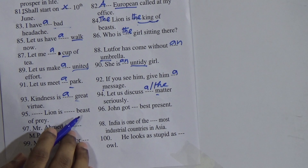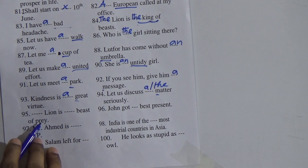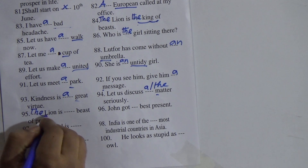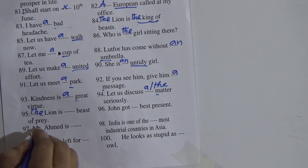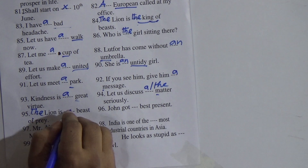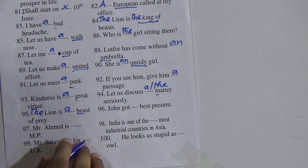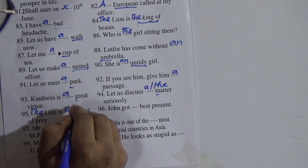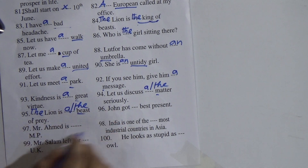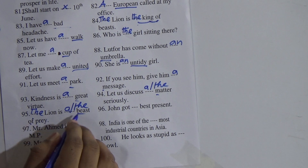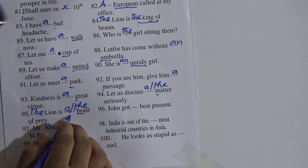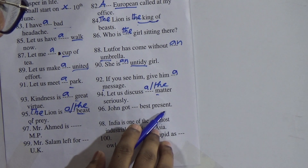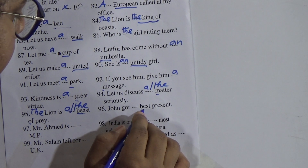95: '___ lion is ___ beast of prey.' Here 'lion' is emphasized so we use 'the'. For 'beast', 'b' is a consonant so we use 'a': 'The lion is a beast of prey.' Alternatively, because of the word 'of' following, you can also write 'The lion is the beast of prey' — both are acceptable.